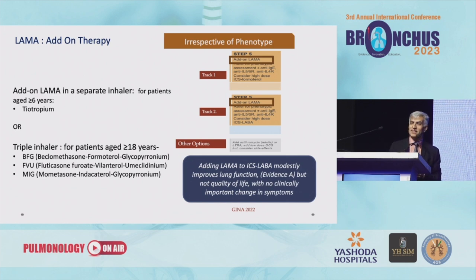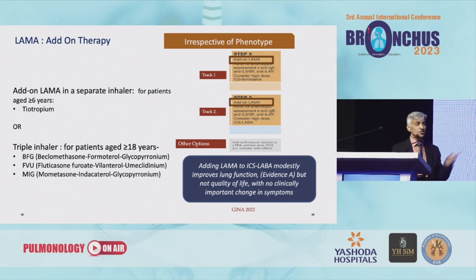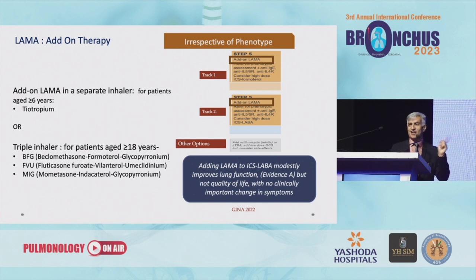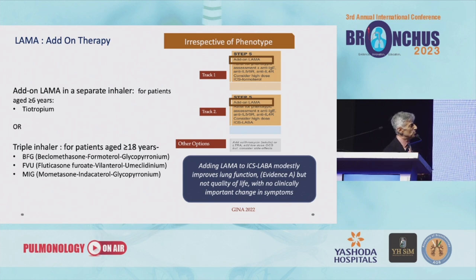Talking about LAMA: how does LAMA help in GINA step 5? Track 1, track 2 — LAMA is the first addition, and there is some confusion since it is even added at step 4. You can use it in a separate inhaler or a triple inhaler. All three triple inhalers are available in India: beclomethasone-formoterol-glycopyrronium, fluticasone-vilanterol-umeclidinium, or mometasone-indacaterol-glycopyrronium. All available — twice a day, once a day, dry powder inhaler, metered dose inhaler, nebulizer solution. Still we will have uncontrolled severe asthma at step 5.